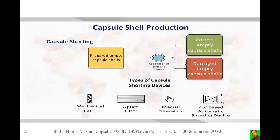The produced empty capsule shells are subjected to sorting devices. Different types of sorting devices include mechanical filters, optical filters, manual filtration, and PLC-based automatic sorting devices. After sorting, correct empty shells are collected and damaged shells are discarded.